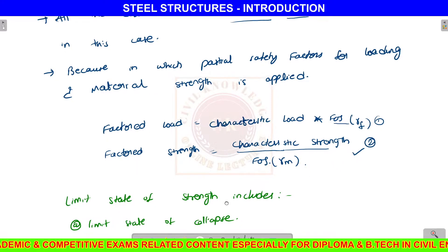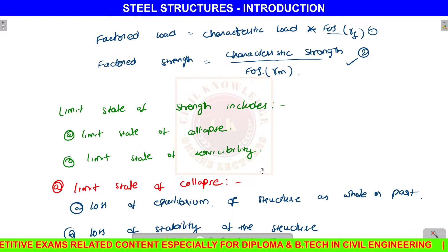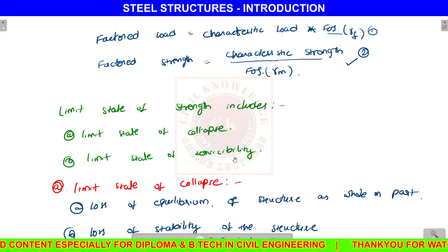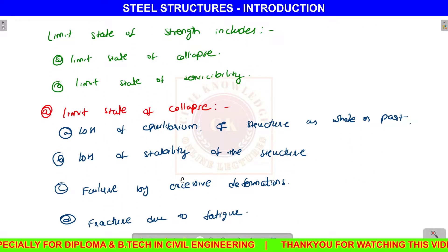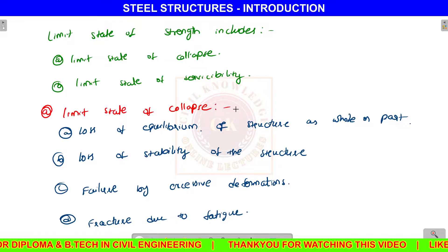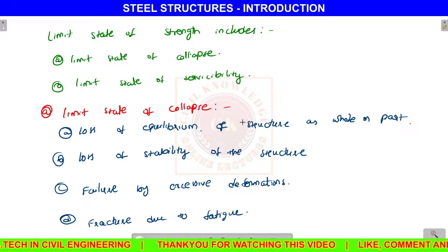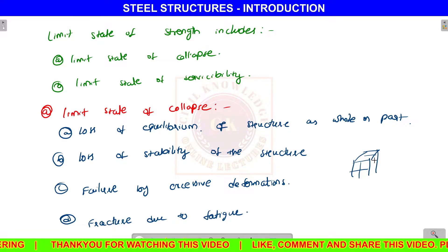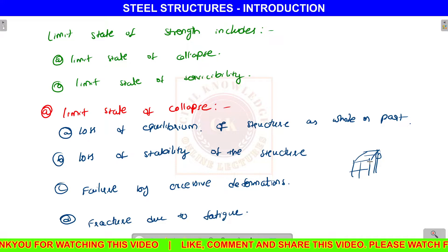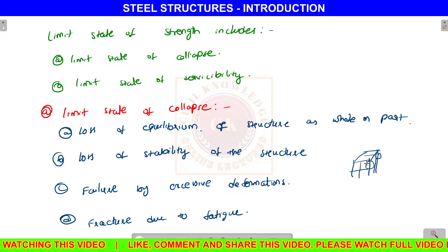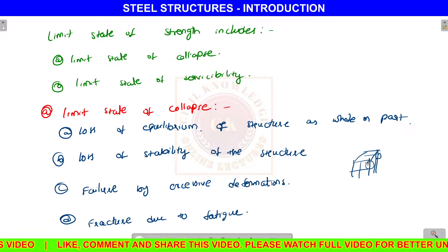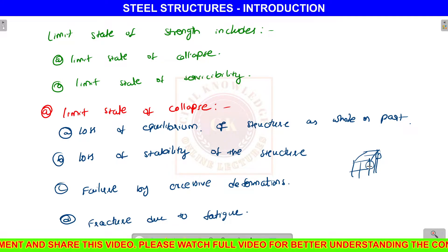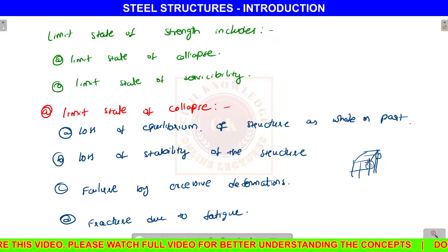The limit state method has two methods: first, the limit state of collapse, and second, the limit state of serviceability. What is the limit state of collapse? Suppose we have a structure that develops a beam-column frame structure. We consider ultimate loads and permissible stresses, and the member may collapse. That failure may be of a part of the member or the whole structure.